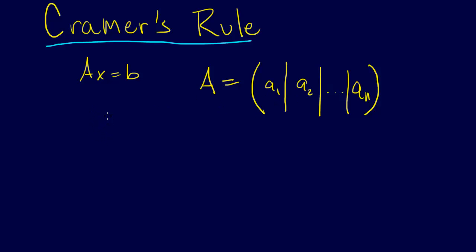And Cramer's Rule says that X1 equals the determinant of the matrix made up of B, so you put B where A1 was, and then A2 to A_N, divided by the determinant of A.